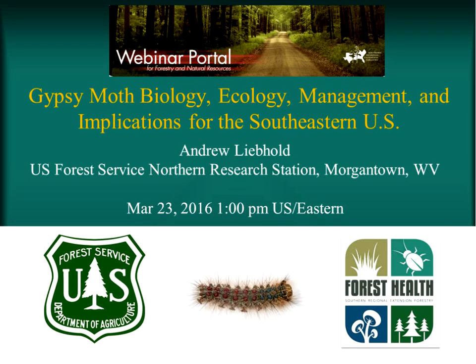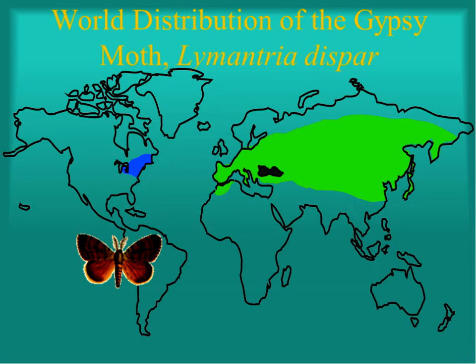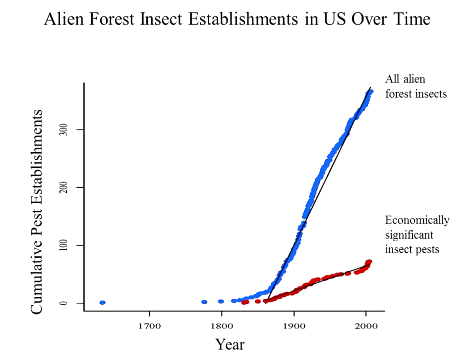The gypsy moth is an example of a non-native species whose native range includes most of temperate Europe and Asia as well as North Africa. In North America it reflects part of a much larger problem of non-native forest insects. We get about two and a half new species of non-native insects establishing every year, and about one-fifth of them are damaging species — so we get a damaging non-native forest insect every other year.